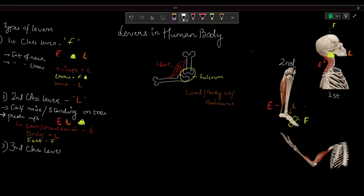In the third class lever, the effort is always in the center of the fulcrum and load. The second class lever is known as the lever of power, while the third order lever is known as the lever of velocity. As you can see, the effort is in the center of fulcrum and load.